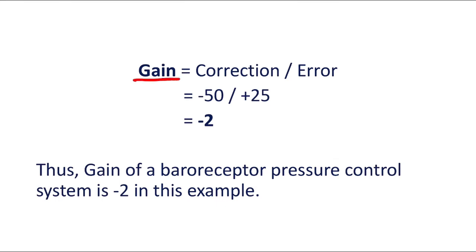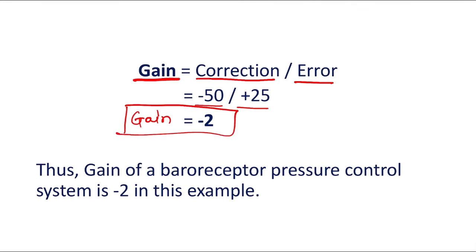So what is the gain of this system? The formula is correction divided by error. Correction is minus 50 and error is plus 25, so in this case the gain is minus 2. This is how to calculate the gain.